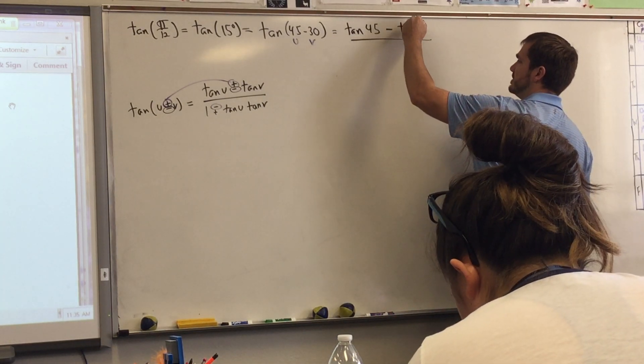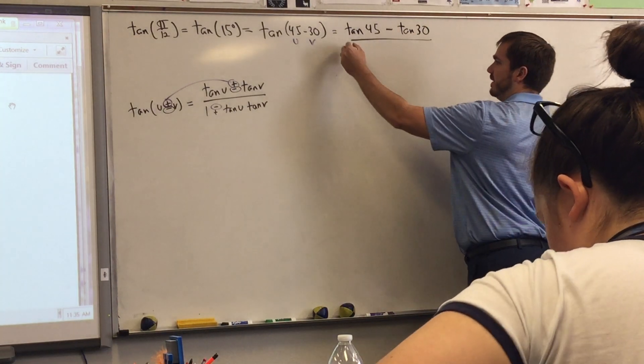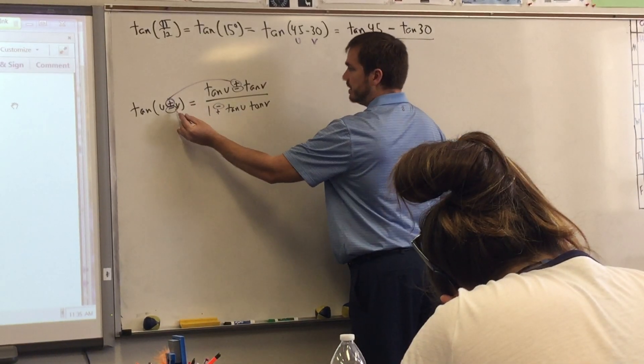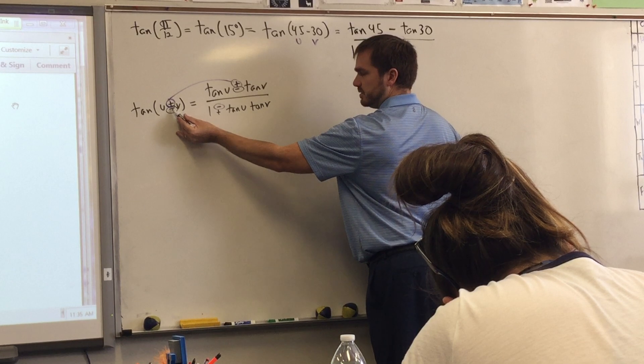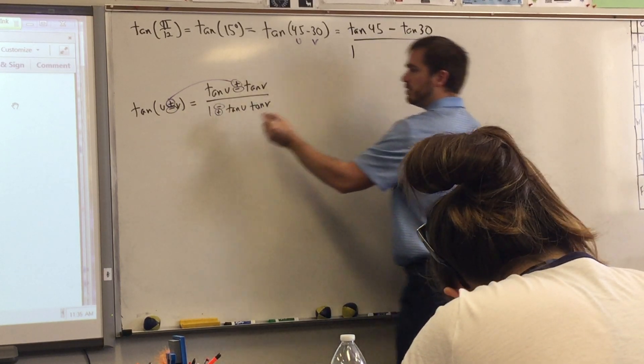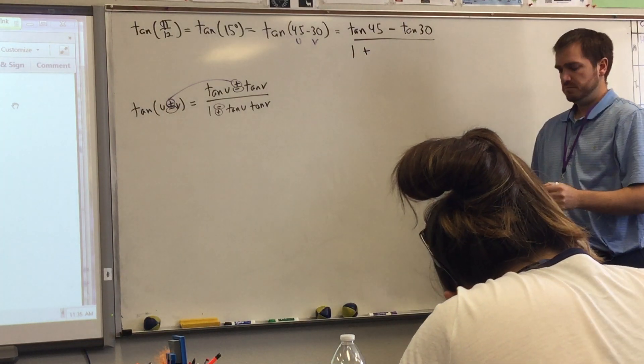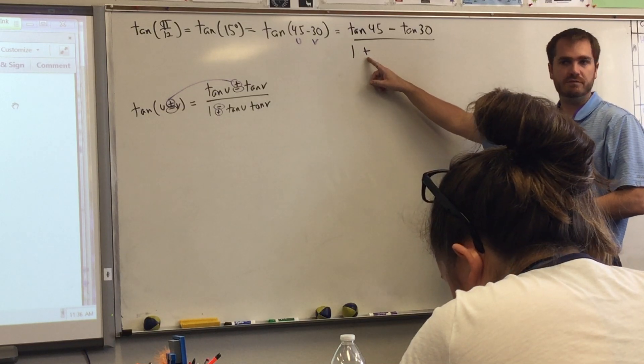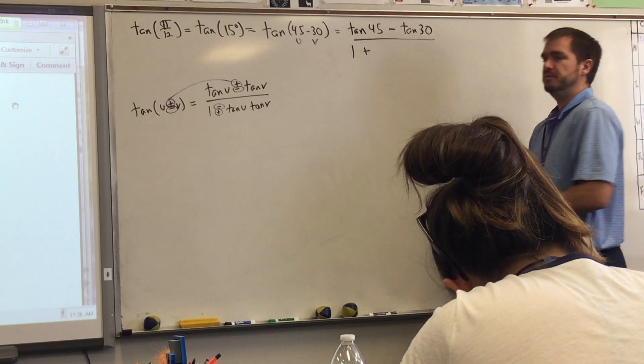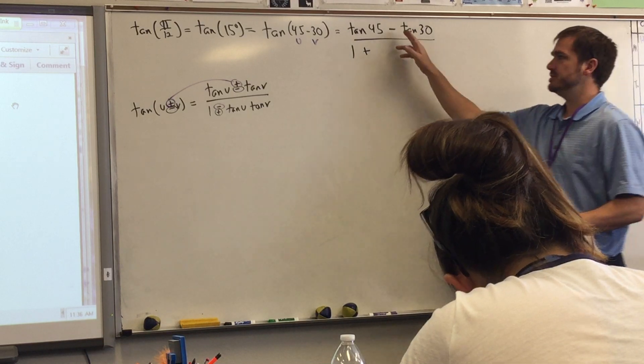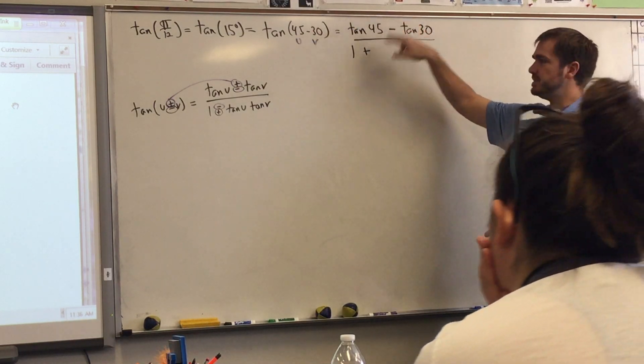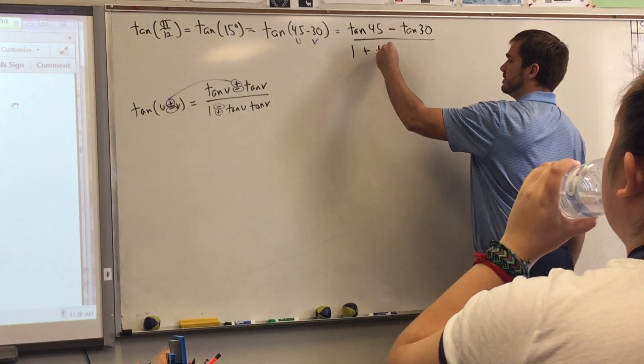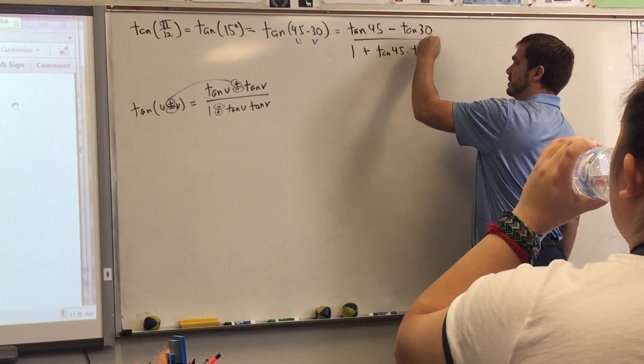So here we go, u and v. So this is tangent 45 plus or minus folks. Let's look and see what symbol we have right here. This is the minus symbol. Notice where the minus symbol is located, it's on the bottom. So therefore when I go to this part up here I'm going to be looking at what symbol is on the bottom, which happens to be a minus. So I'll put a minus. So tangent 45 minus tangent 30 divided by 1. She says plus, let's verify.